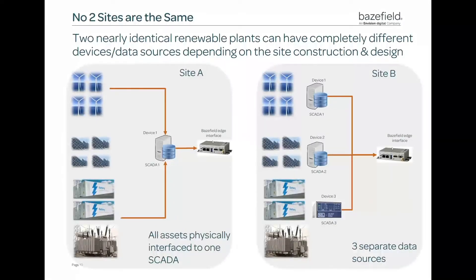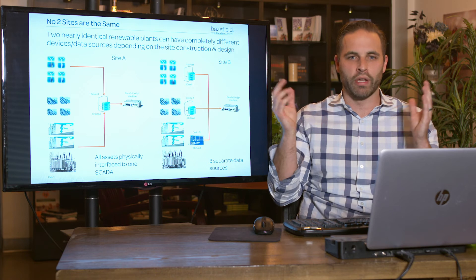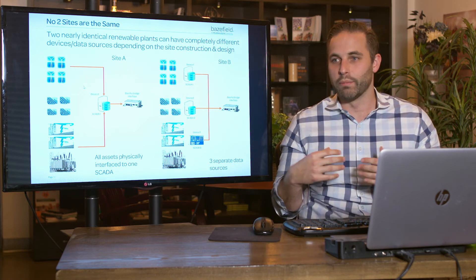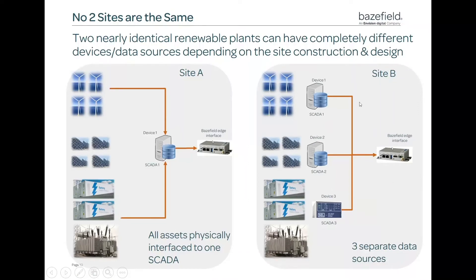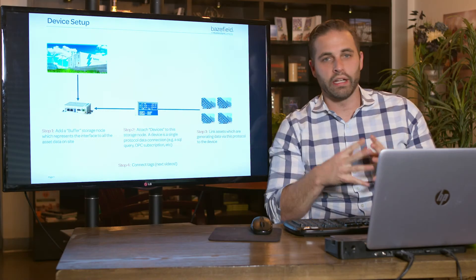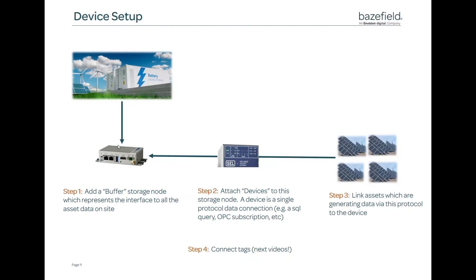The issue, and why you need a flexible data management platform, is that no two sites are the same. Take a site that has wind turbines, inverters, batteries, and substations — all different types of assets. Sometimes the developer may have integrated all that data into one individual SCADA system, which makes our life easier. Often though, we have to connect to three or four different protocols and devices when we engineer a site. So we need a tool that can connect and model all types of behavior — and to do that, it's a four-step process, which I'm going to demonstrate now. First, we add a buffer storage node using our device manager. Then we attach protocols or devices to that storage node. Finally, we describe and attach the physical assets in Basefield to that device so it can all be modeled in a nice hierarchy.